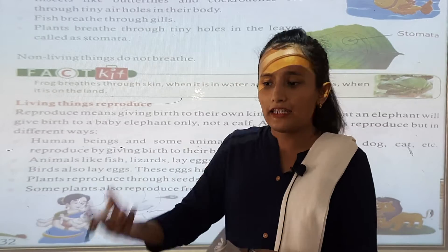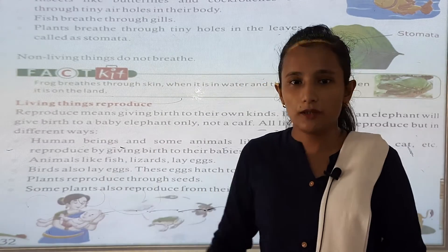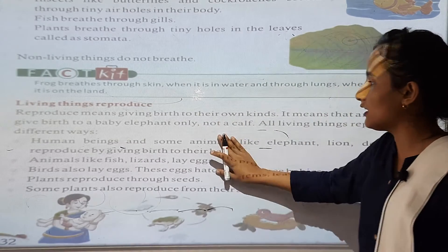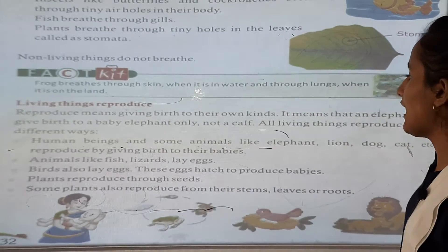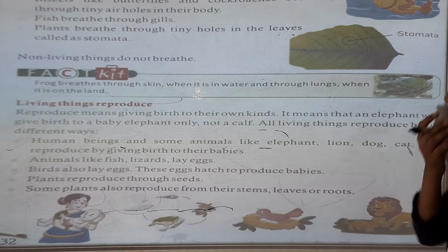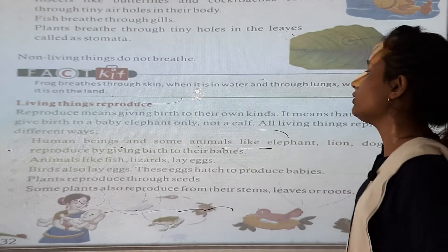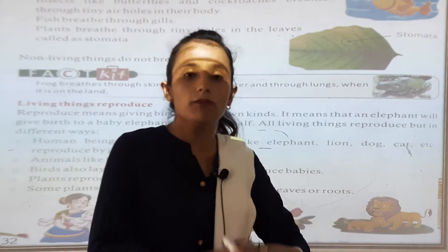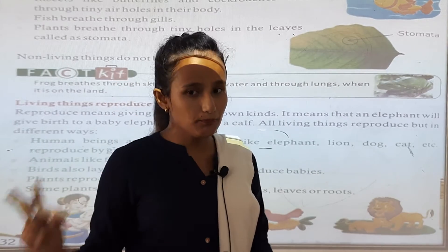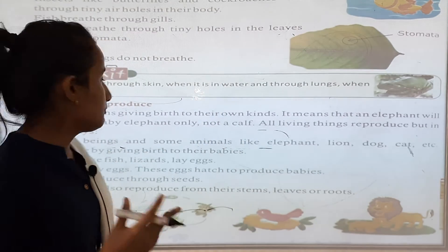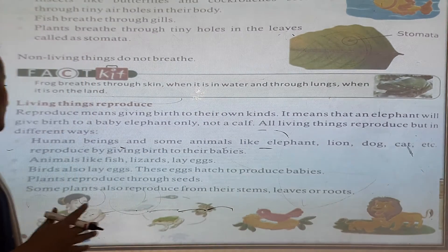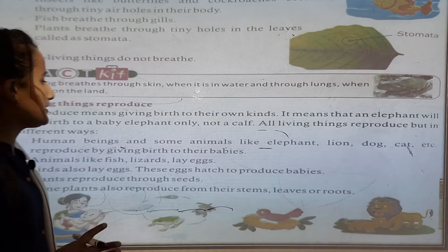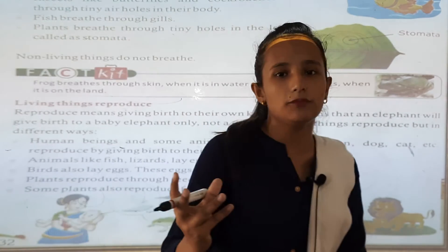Plants also have babies. Animals like birds have their babies. But there are different ways. Human beings and some animals like elephants, lions, dogs reproduce by giving birth to their babies. But birds and snakes give eggs, and with the help of those eggs, the babies come out.